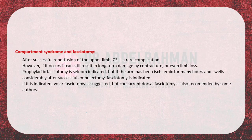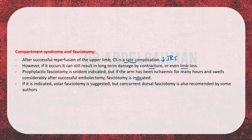Regarding compartment syndrome and fasciotomy: after successful reperfusion of the upper limb, compartment syndrome is a rare complication due to the milder ischemia-reperfusion injury compared to the lower limb. However, if it occurs it can still result in long-term damage by contracture or even limb loss. Prophylactic fasciotomy is seldom indicated, but if the arm has been ischemic for many hours and swells considerably after successful embolectomy, fasciotomy is indicated. When indicated, volar fasciotomy is suggested, though concurrent dorsal fasciotomy is also recommended by some authors.